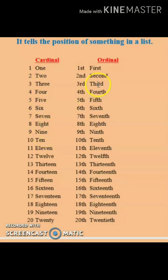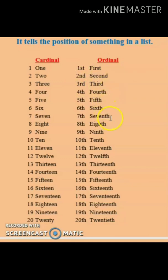Ordinal numbers refer to the position of something. For example, if you say she stood first in the class or she stood second in the class, first, second, third, fourth — these tell the position of that child. So these are ordinal numbers. Let's start: one — first, second, third, fourth, fifth, sixth, seventh, eighth, ninth, tenth.